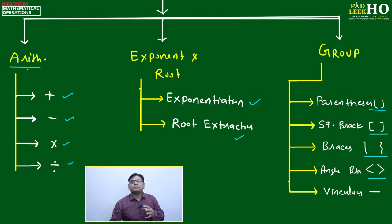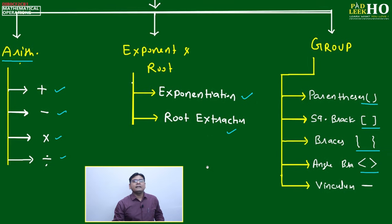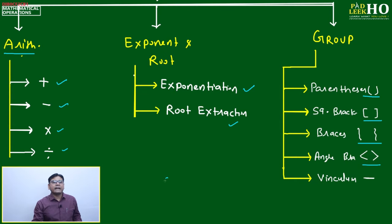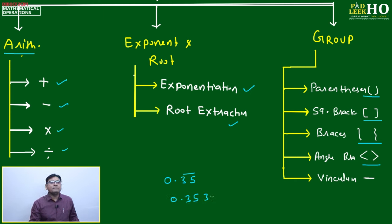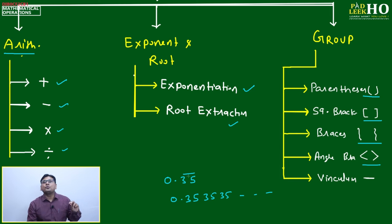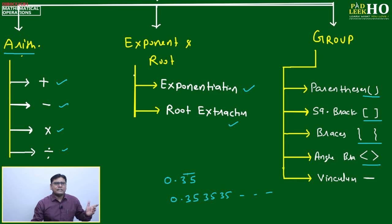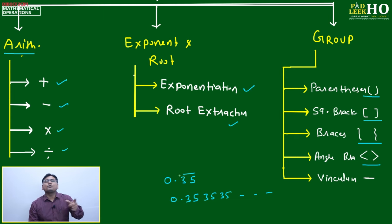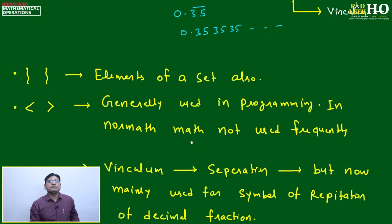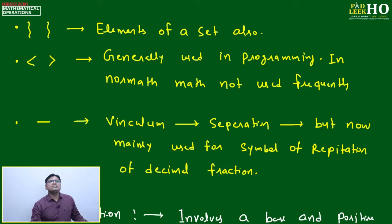Vinculum means repetition — in the present sense it mainly means repetition, like if you are writing 0.35 with a bar over it, meaning 353535 repeating infinitely. This shows repetition of digits, mainly in decimal fractions. For rational or irrational numbers, if it is non-terminating, you can identify it using the vinculum bar above the numbers.